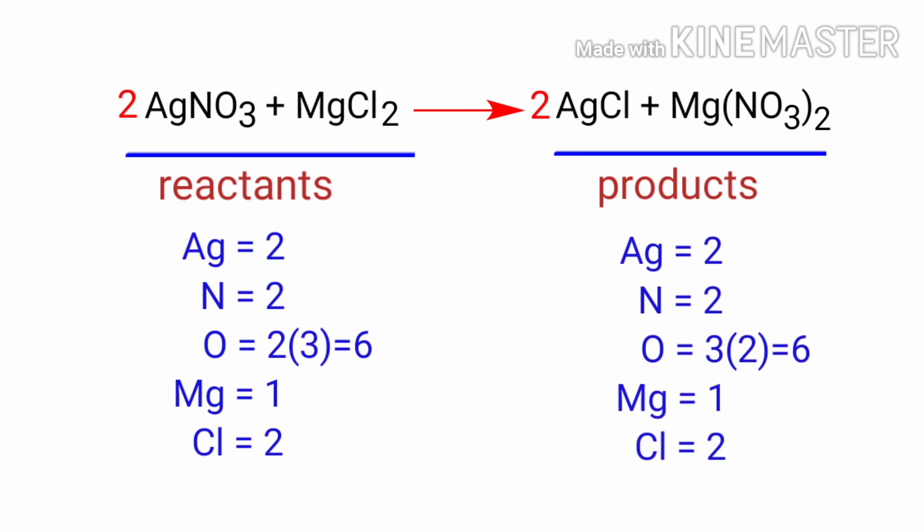The equation is now balanced. There are two silver atoms, two nitrogen atoms, six oxygen atoms, one magnesium atom, and two chlorine atoms on both sides.